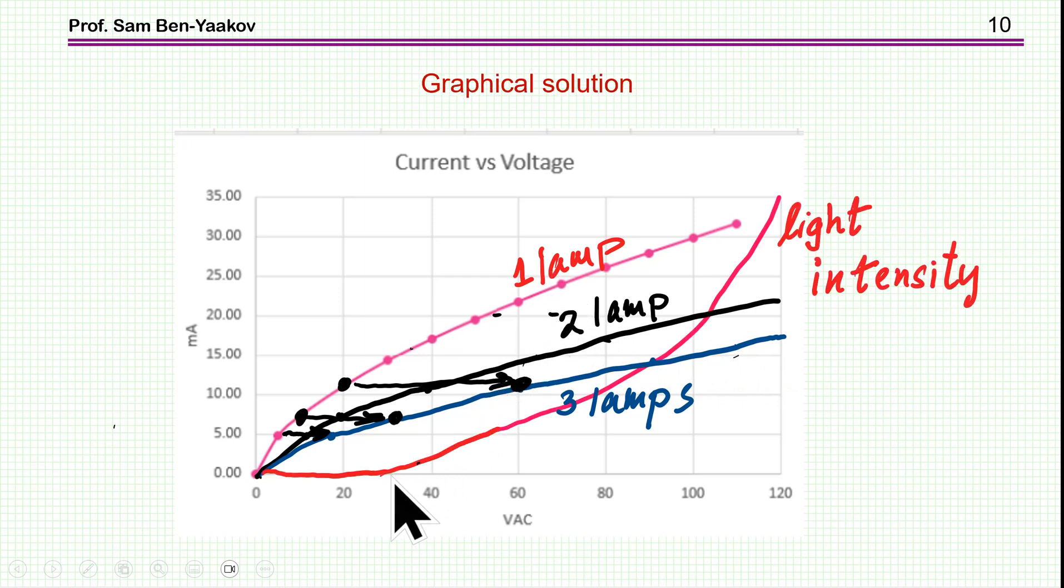And then on top of it, I'm adding the light intensity, just drawing in my hand. This is just a conceptual solution. Of course, it's not an accurate solution for a given lamp. It is just showing the way to do it. So I put here like almost zero light intensity, up to say 30%. And then it goes up to 100%.